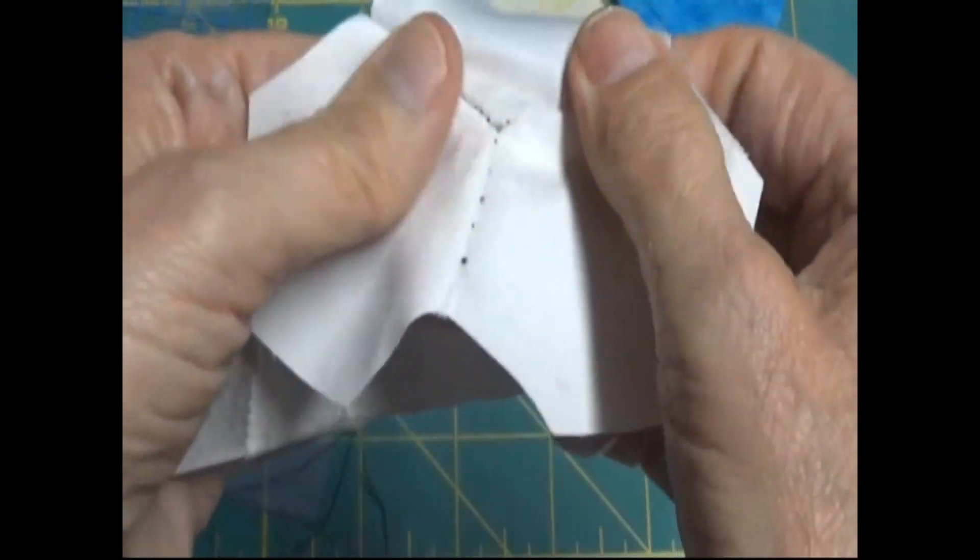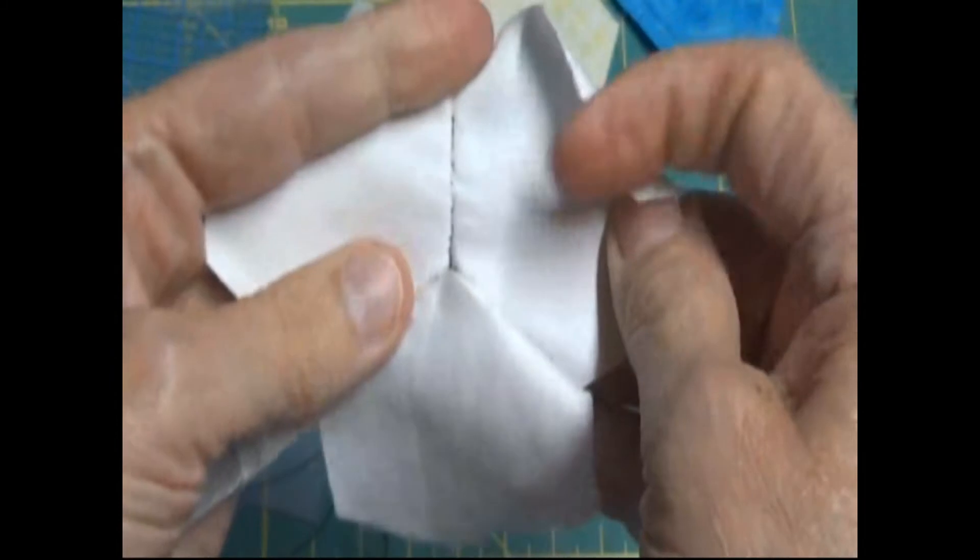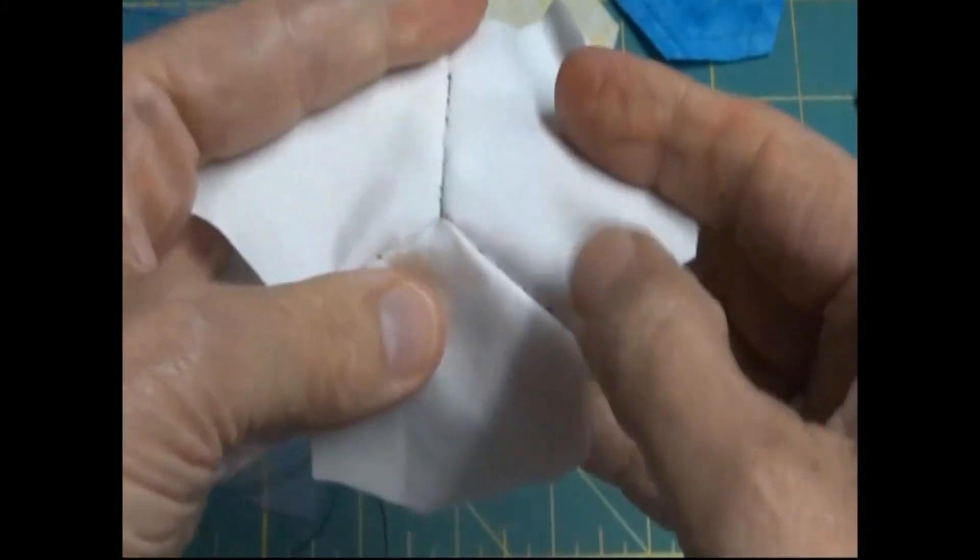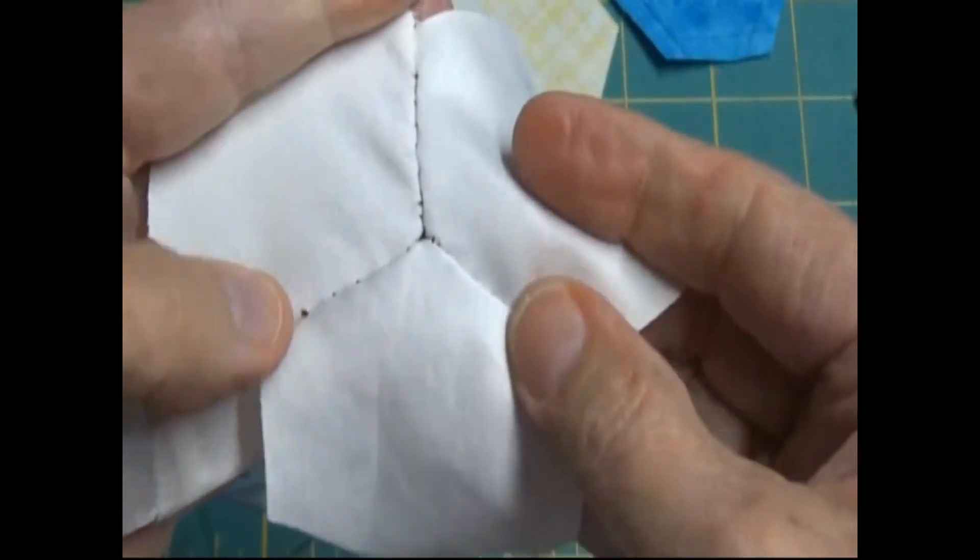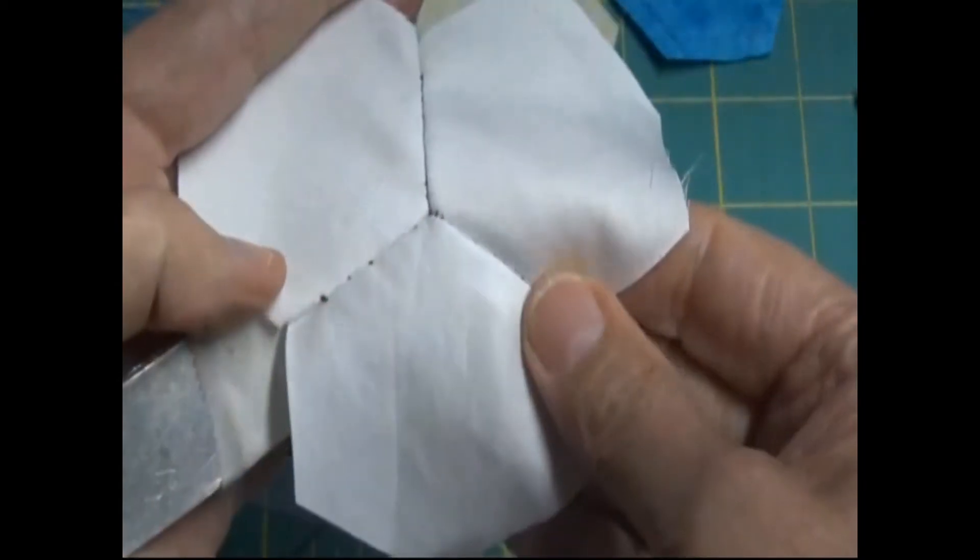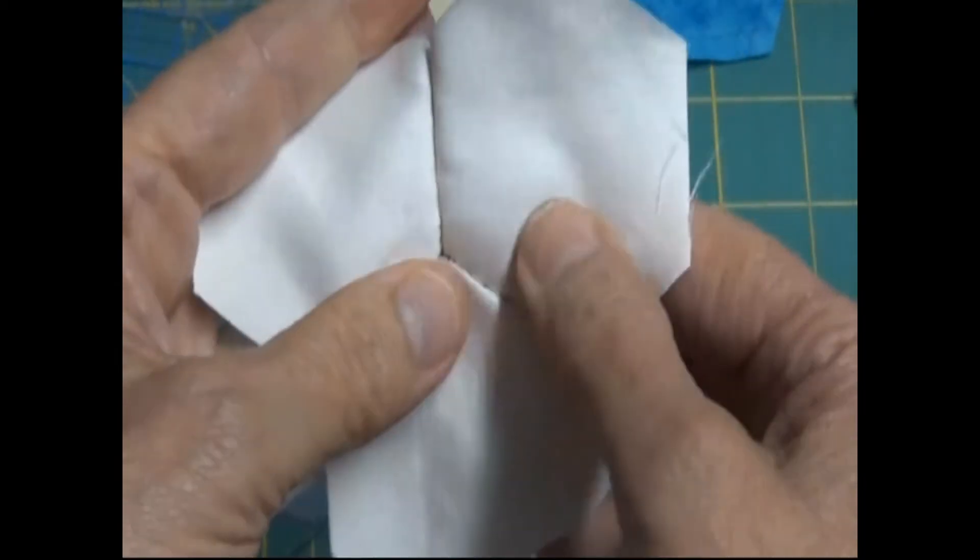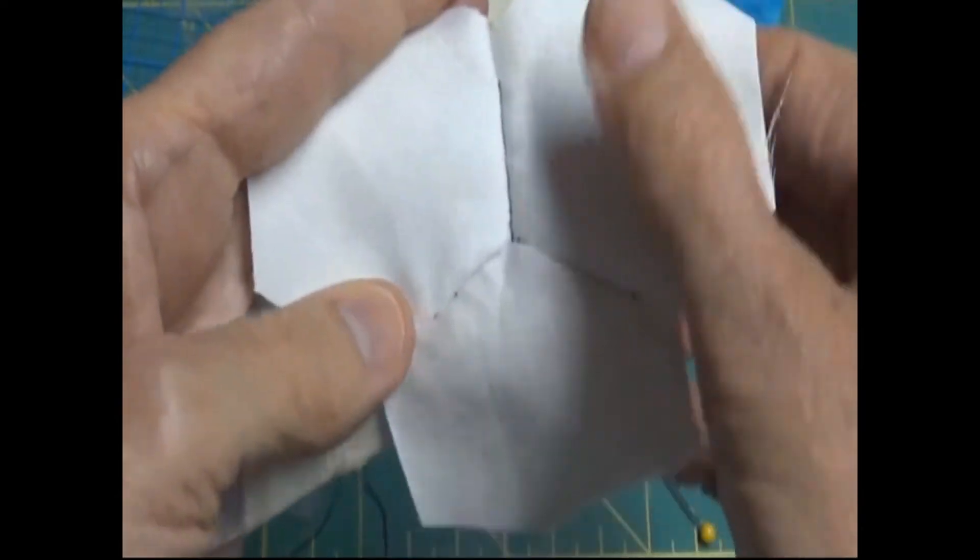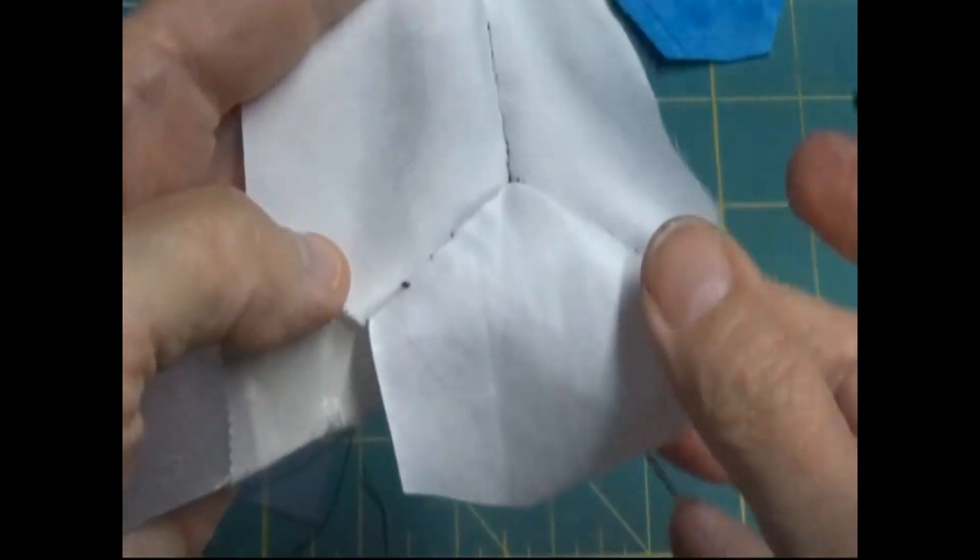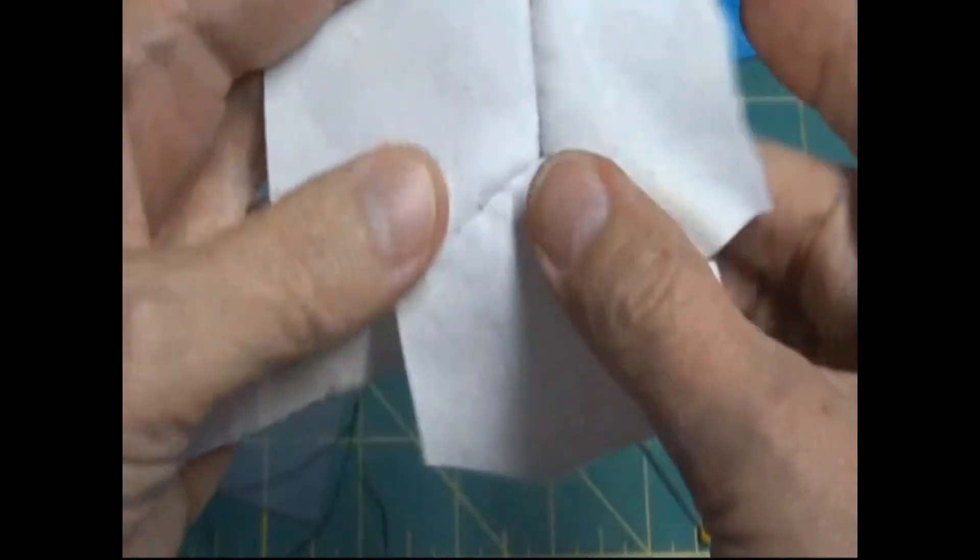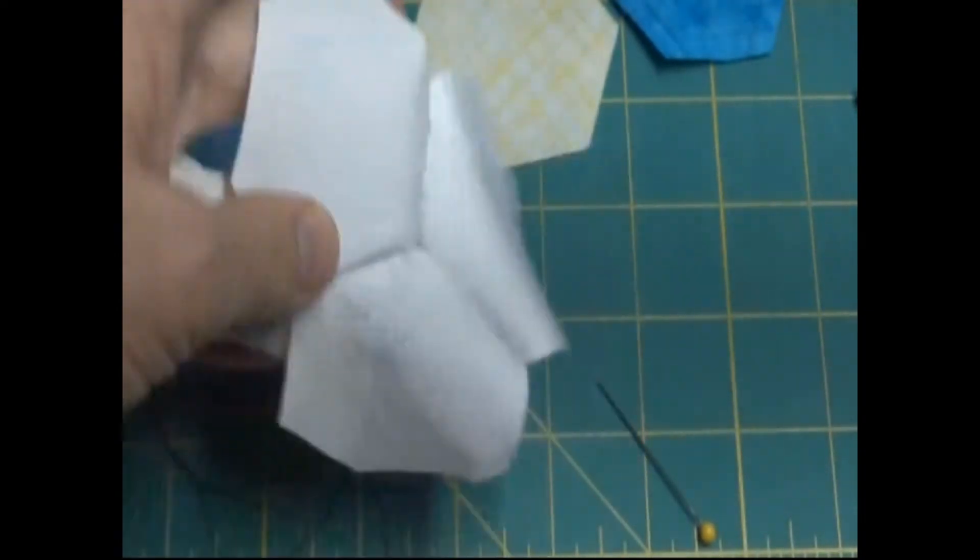When you open this, what you're going to see is you have your hexagon sewn together. But your corner, sorry about the black thread, your corner is going to come right tight to the others. Because it comes in a quarter of an inch. And they're all going to do that.